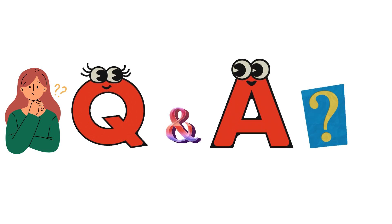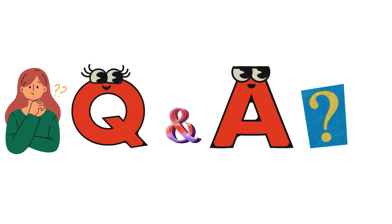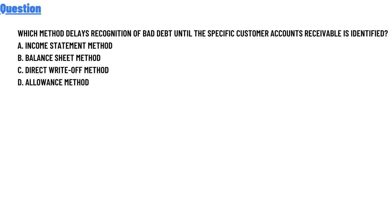Today's question is: which method delays recognition of bad debts until the specific customer accounts receivable is identified? Option A: income statement method. Option B: balance sheet method. Option C: direct write-off method. Option D: allowance method.